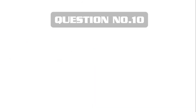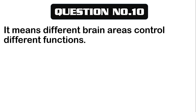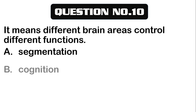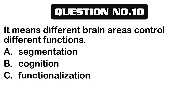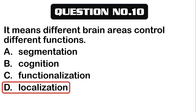Number 10. It means different brain areas control different functions. A. Segmentation. B. Cognition. C. Functionalization. D. Localization. The correct answer is letter D, Localization. It means different brain areas control different functions.